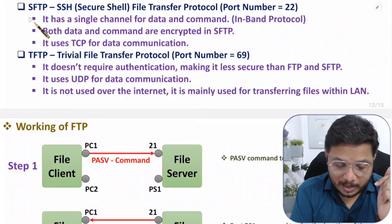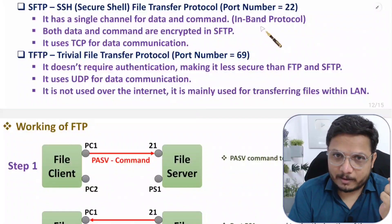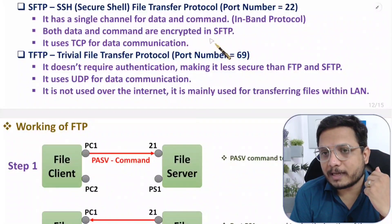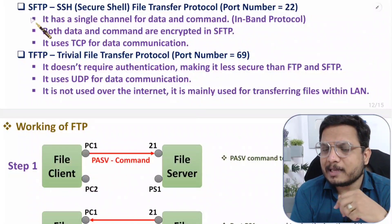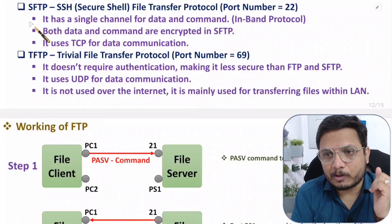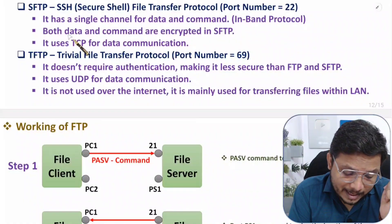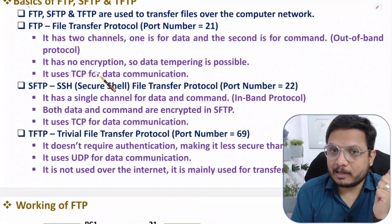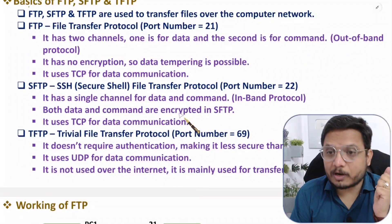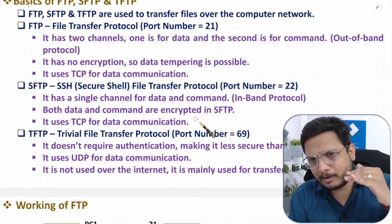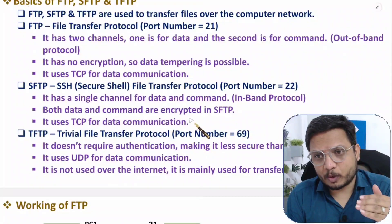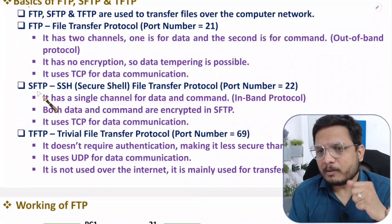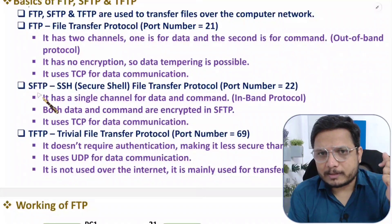A major difference between SFTP and FTP is in-band versus out-of-band. In SFTP, both data and commands are encrypted, making SFTP a secured protocol compared to FTP. With FTP there is no encryption. Nowadays we work with SFTP only for file transfer on computer networks. Previously in the 1990s and 2000s we were using FTP.